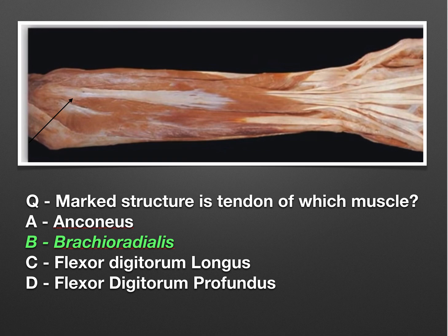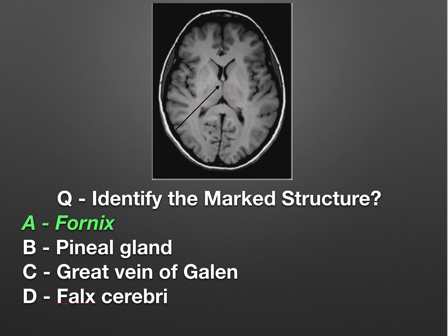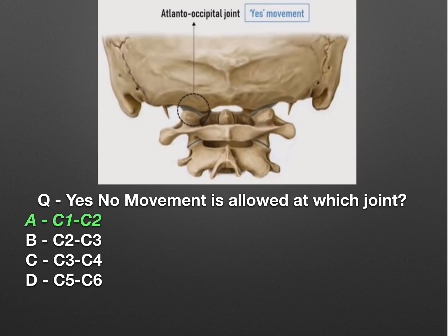Next, a CT or MRI image was given and asked to identify the marked structure. The options were confusing — many might mix up between fornix, pineal gland, great vein of Galen, and falx cerebri. The correct answer is fornix — the structure marked was the fornix, not the pineal gland or great vein of Galen.